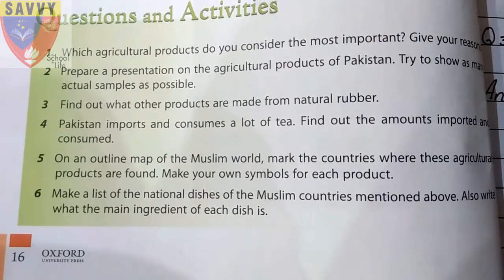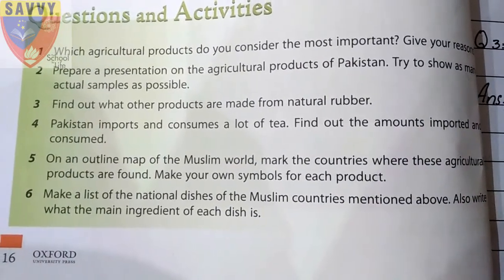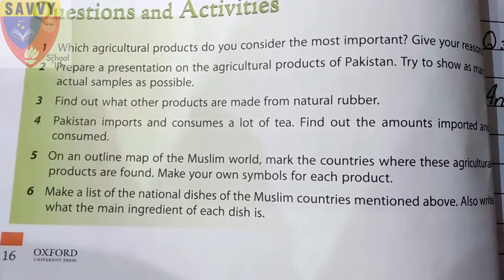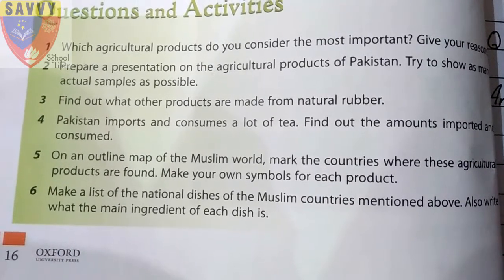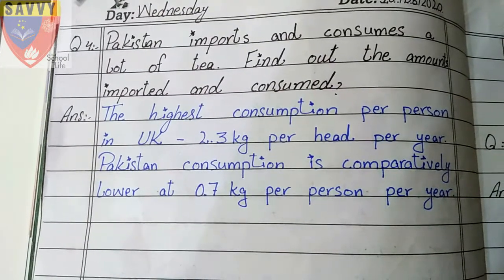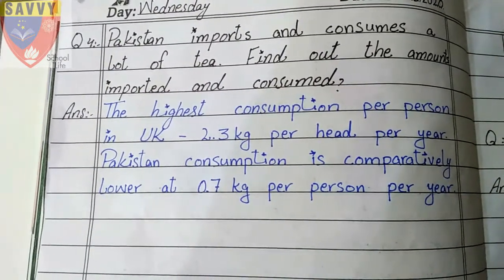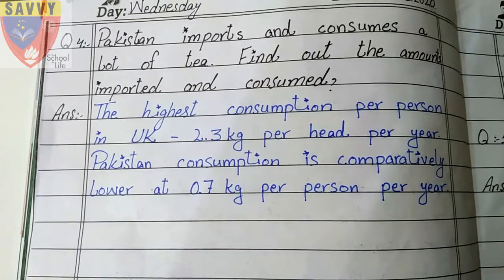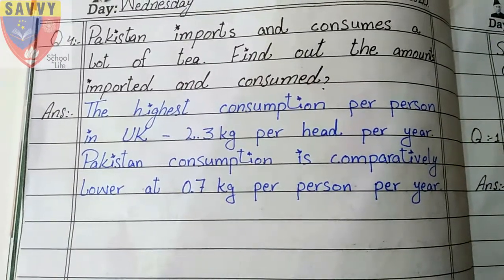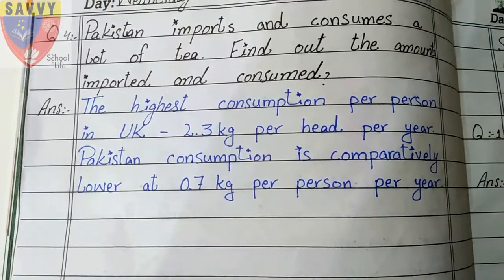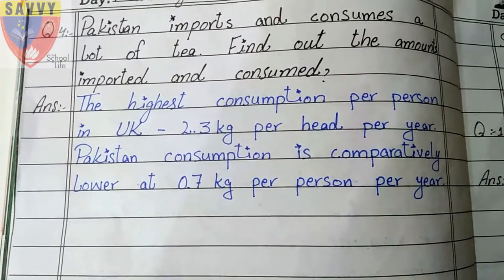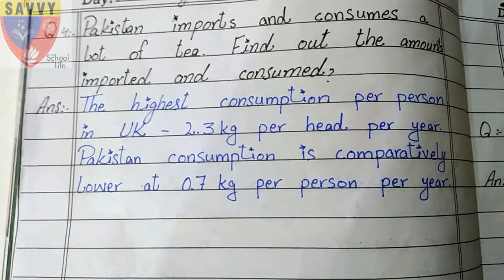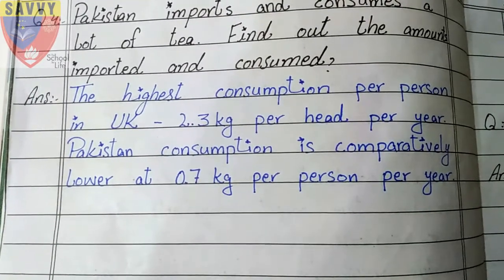Question 4: Pakistan imports and consumes a lot of tea — find out the amounts imported and consumed. The highest consumption per person is in the UK at about 2.3 kg per head per year. Pakistan's consumption is comparatively lower at 0.7 to 0.8 kg per person per year.